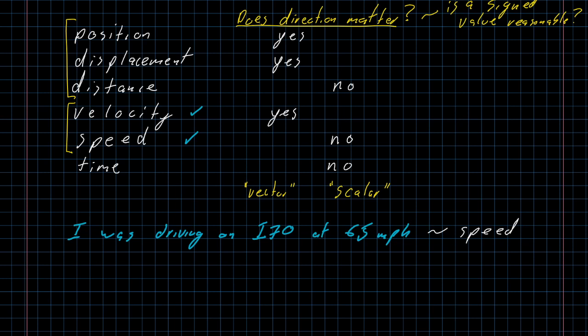If I wanted to make it a description of velocity, I would have to continue the phrase. I was driving on I-70 at 65 miles an hour traveling in the westbound lane. Now I know not just how fast I was going, but which way I was going. I was heading west, not east. And by adding that extra piece of information, I've gone from talking about a speed to talking about a velocity.